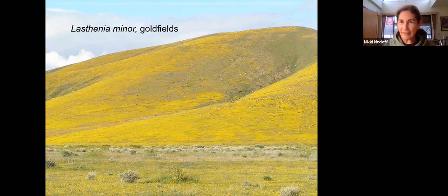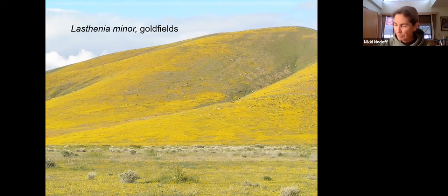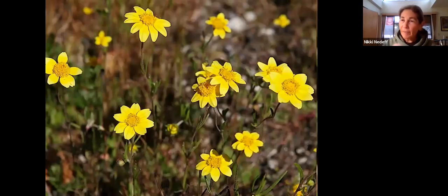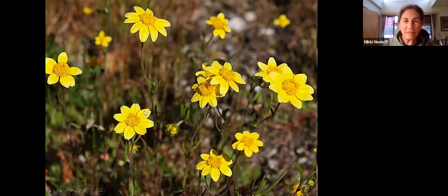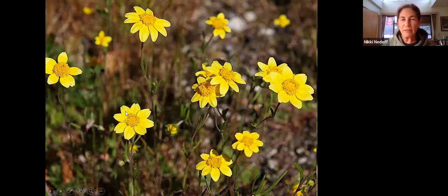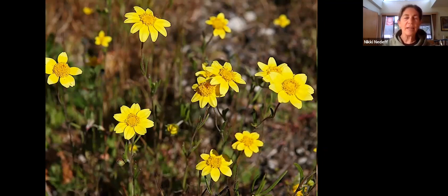Goldfields are classic in more dry habitats where the soils tend to be a little shallower. They make these beautiful blankets of yellow on the hillsides. Up close, goldfields are classic little sunflowers from the Asteraceae — the sunflower family — with disc florets right in the middle and ray florets or ligules around the edge. Each ray floret and each interior disc floret is an individual flower that produces a single seed, which is classic of the Asteraceae family.